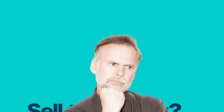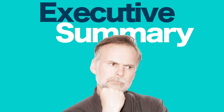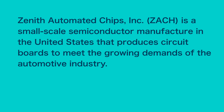Now you're ready to write a three-part description and analysis determining if selling the stock is a sound investment decision. In the beginning, your executive summary should provide a brief explanation of the company and its potential for future growth. For example, Zenith Automated Chips Incorporated, or ZAC, is a small-scale semiconductor manufacturer in the United States that produces circuit boards to meet the growing demands of the automotive industry.